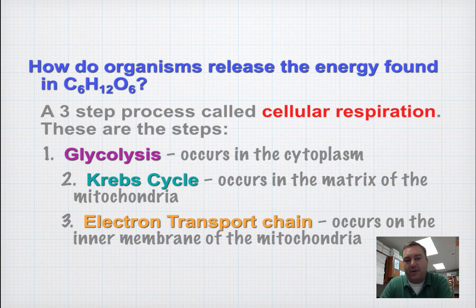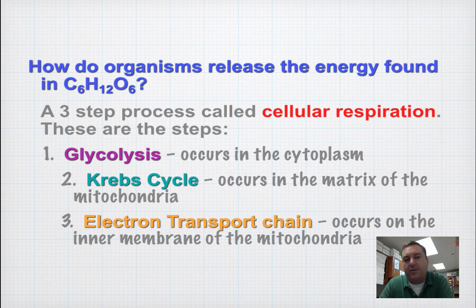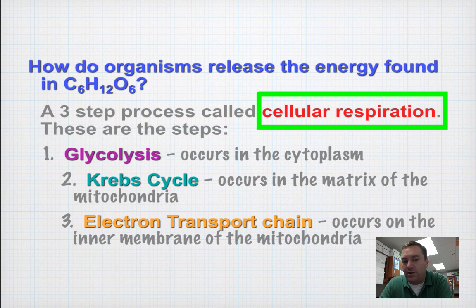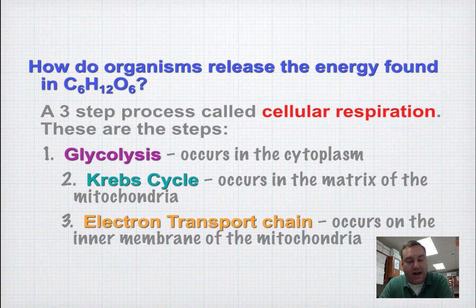First up, you need to be able to release the energy found in carbohydrates, specifically glucose, which is C6H12O6. This is done through a three-step process called cellular respiration. Cellular respiration is basically the same thing as aerobic respiration, and aerobic means that you're going to use oxygen — in fact, we're going to use oxygen at the very last step.